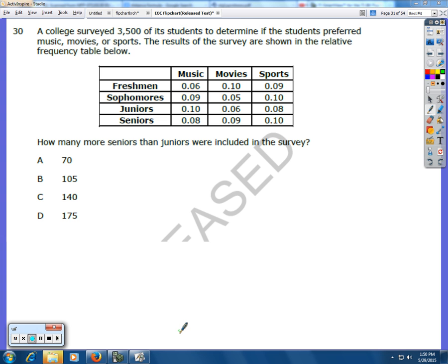If you notice, most frequency tables have a total column. This frequency table does not have a total column. So what you're going to do is you're actually going to add a total column at the end. Then you're going to add up the percentage specifically for juniors and seniors. We're going to add up the decimals here for juniors and add up the decimals here for seniors.